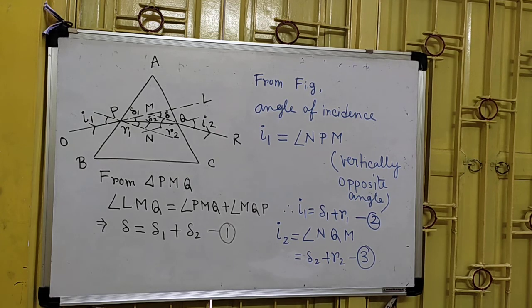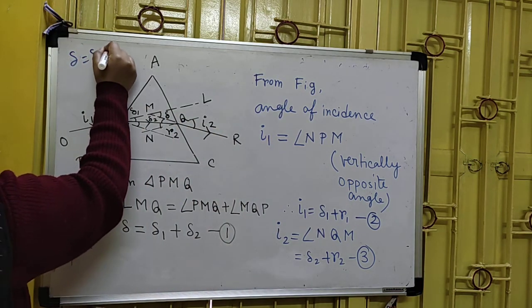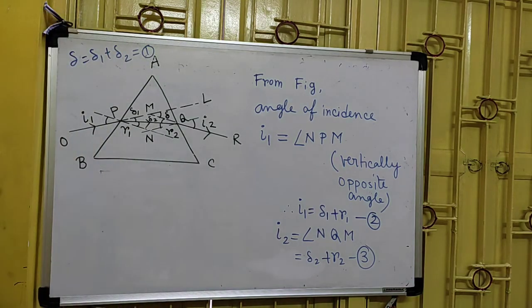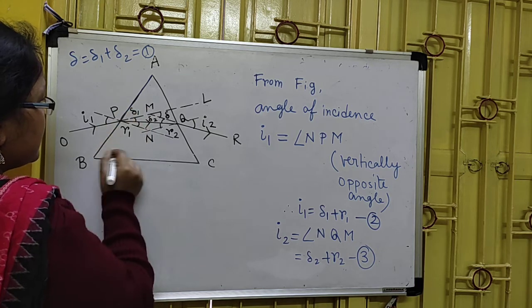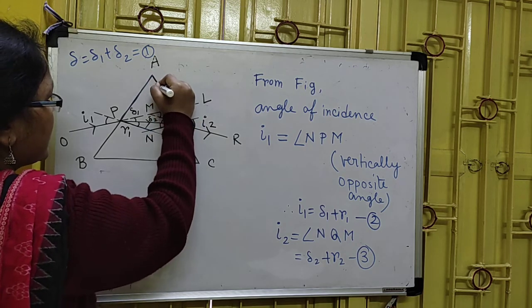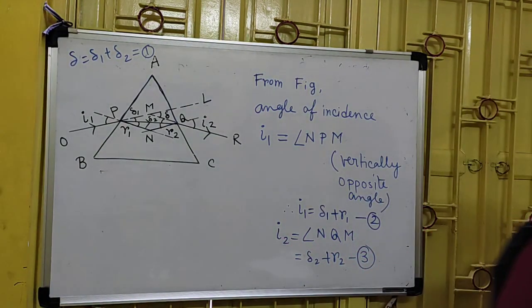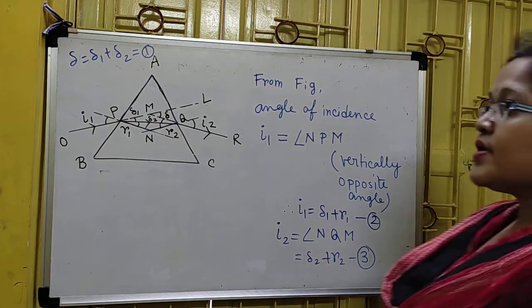In the description box, notes are given — everything is given there, just understand the concept here. Now coming to the next part. If you see carefully, two things are happening. If I am considering this part — A, P, N, Q — this is a quadrilateral. Yes, A, P, N, Q is a quadrilateral.